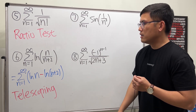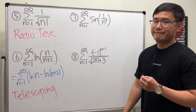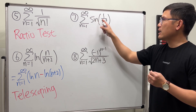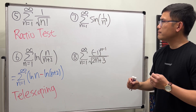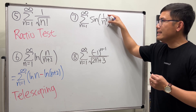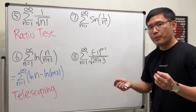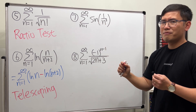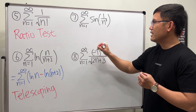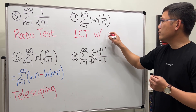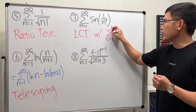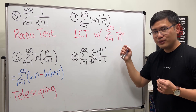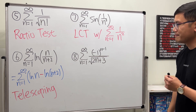Number seven: the series as n goes from 1 to infinity of sin(1/n²). We have 1/n² inside the sine. A comparison might work, but dealing with inequalities involving sine is tricky, so try the Limit Comparison Test instead — compare with the series of 1/n². That series converges because p = 2, which is greater than 1.